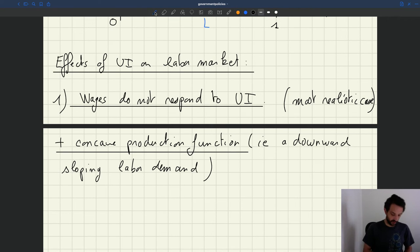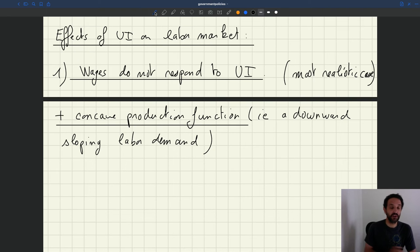Okay, so that's what we are going to start with. So this would be, for instance, what happened in our typical matching model with job rationing, in which of course the production function is concave. And in addition, wages are rigid. They only depend on productivity a little bit, but they do not depend on UI.